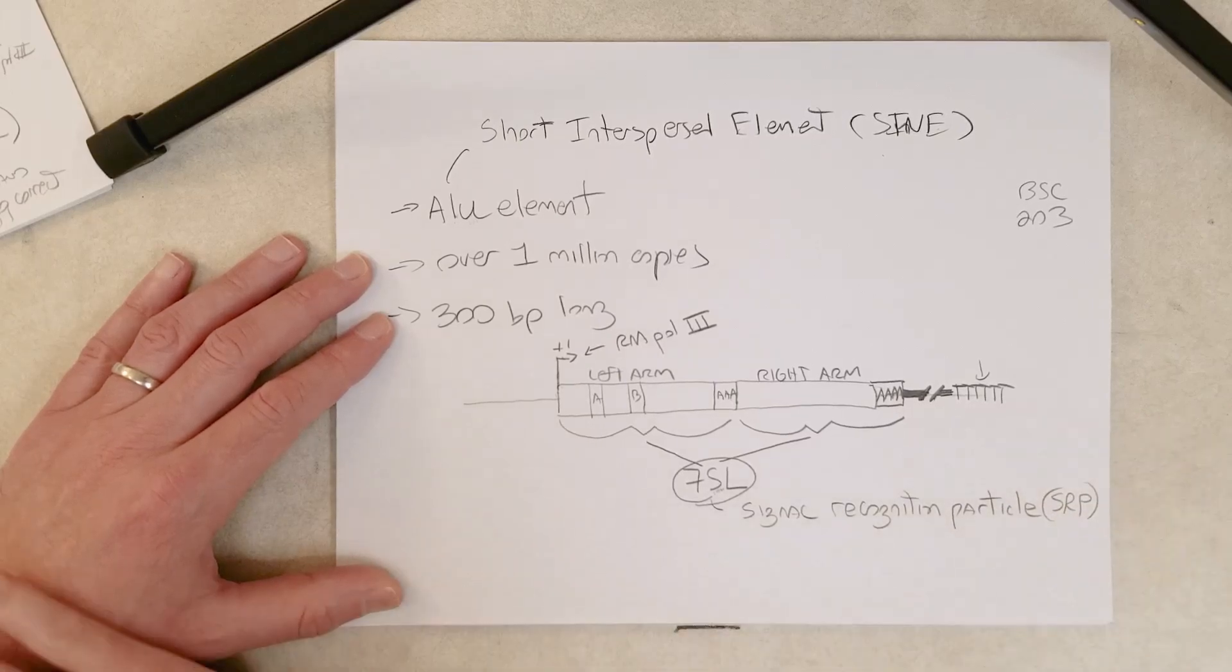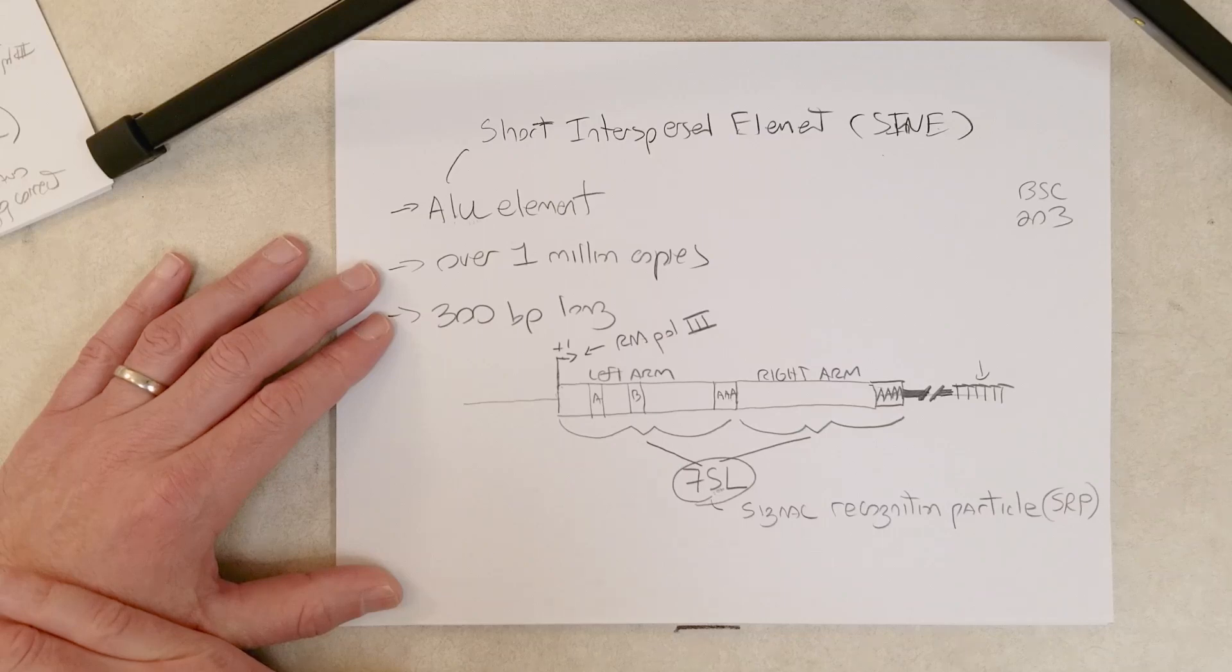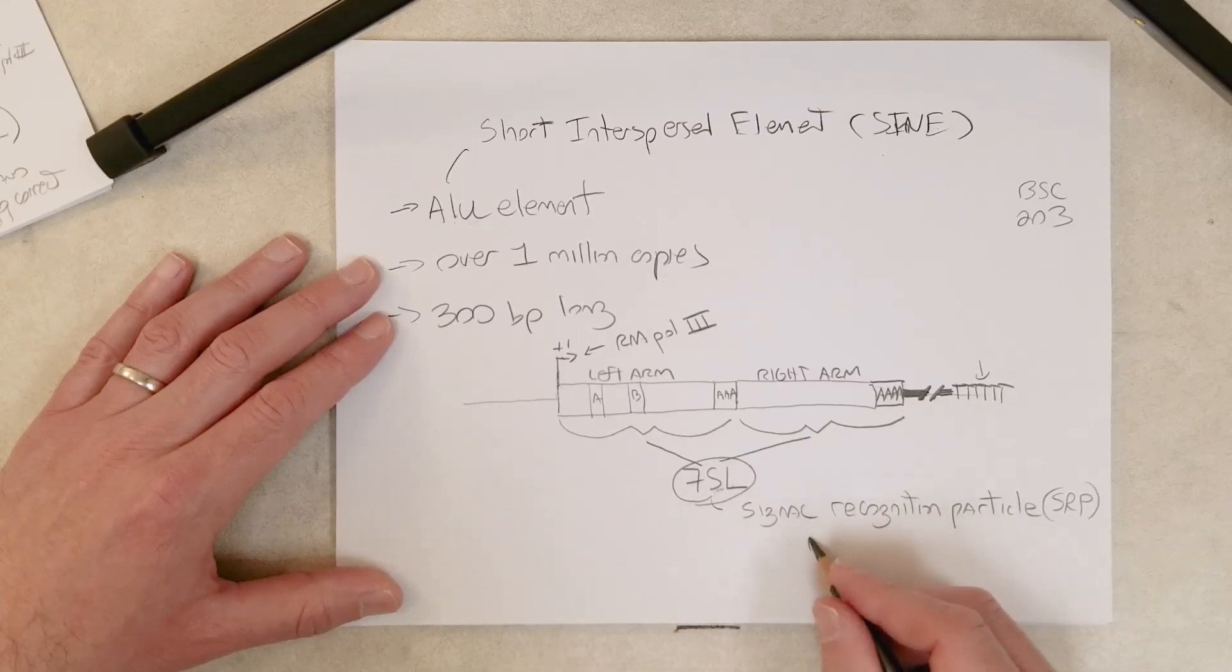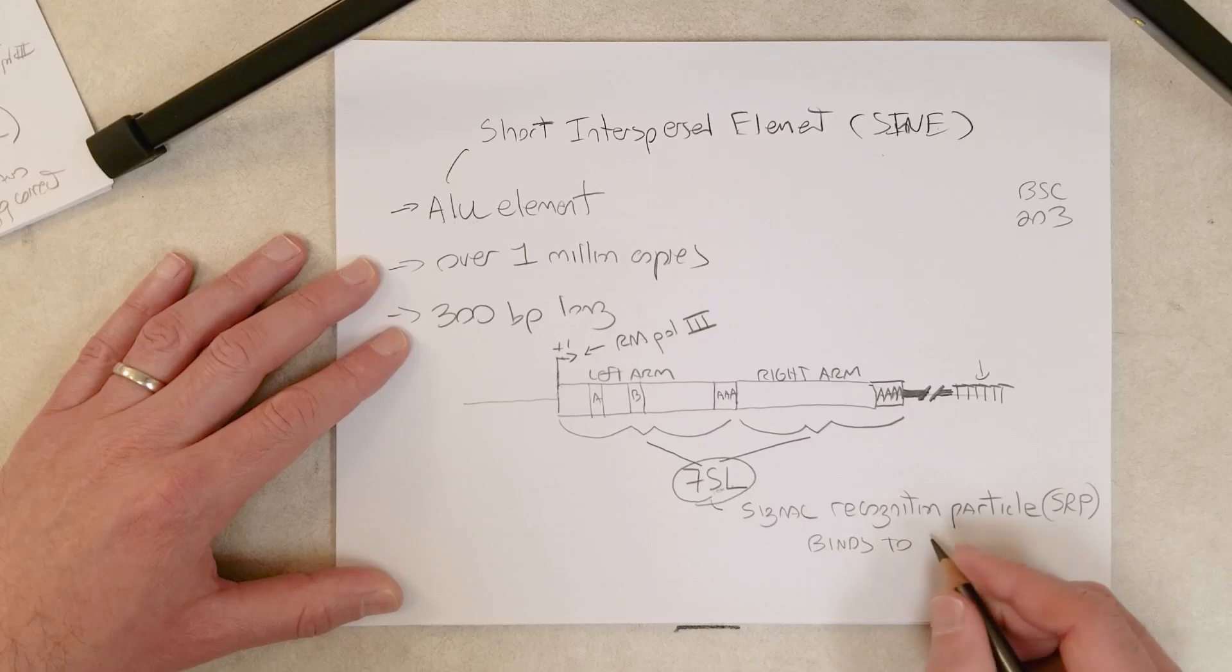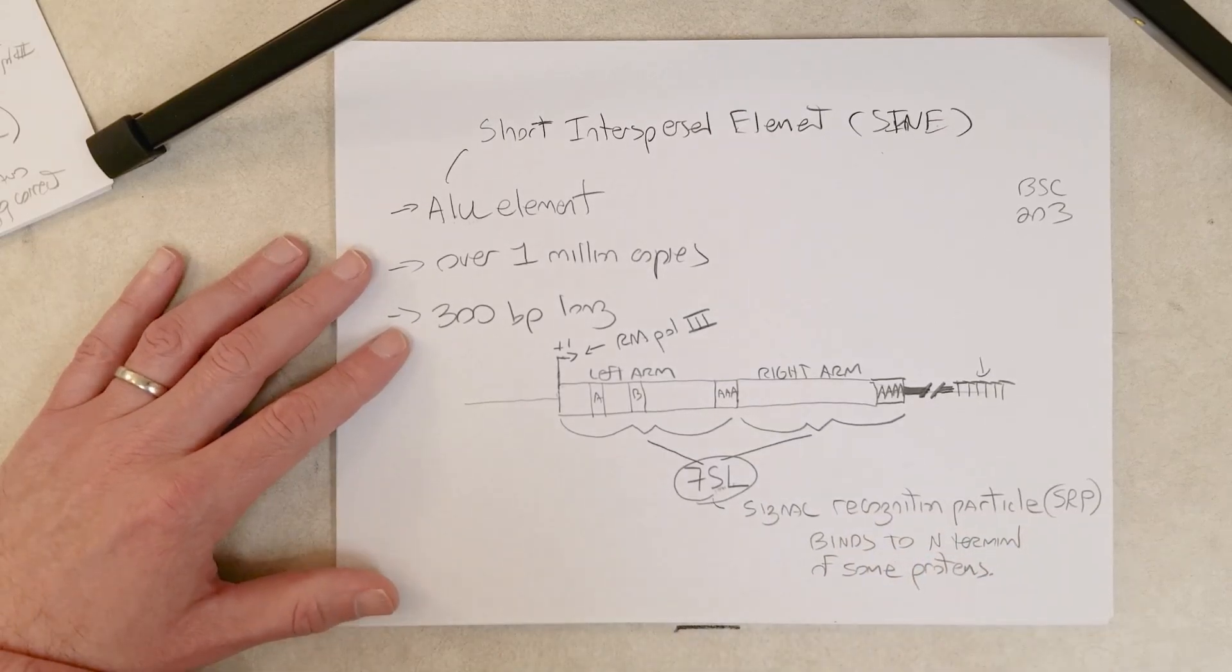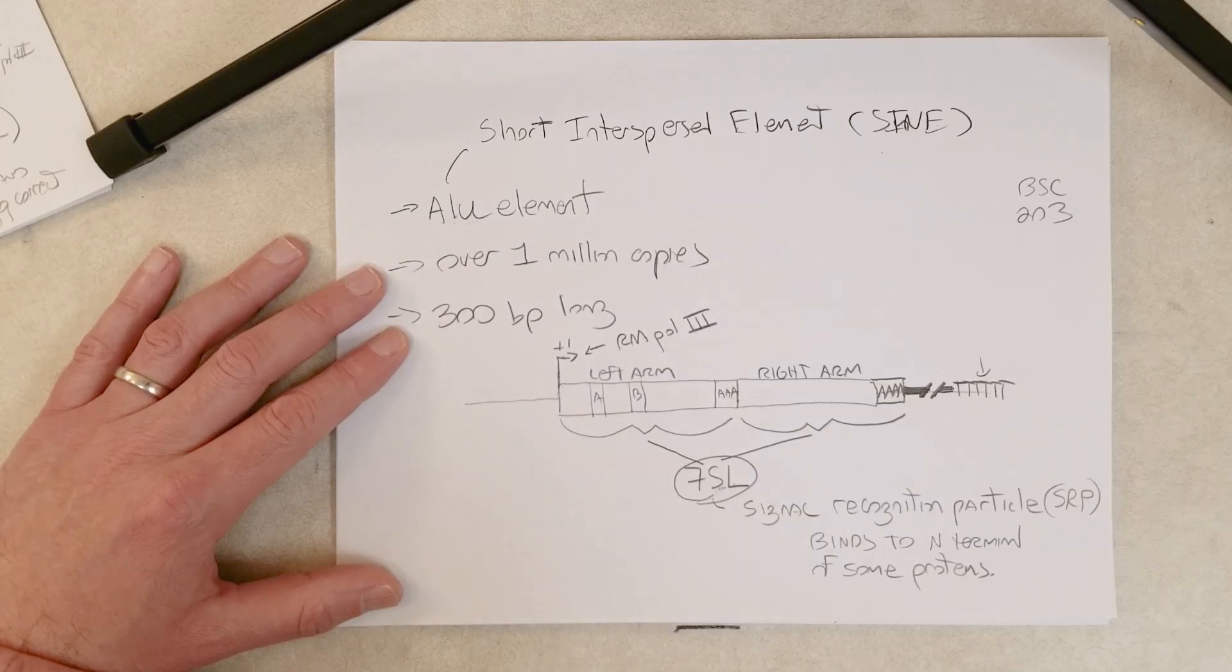Just like ribosomal RNAs form parts of ribosomes, spliceosomal or small nuclear RNAs form part of spliceosomes, 7SL forms part of the signal recognition particle. The signal recognition particle binds to the N-terminal end of some proteins and helps transport those proteins to the correct locations in the cell, or if it's a protein that needs to be secreted, it'll help secrete that protein.